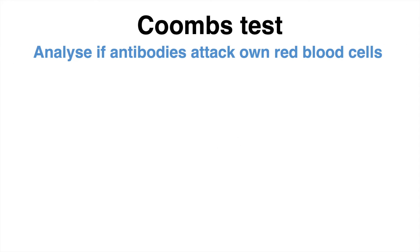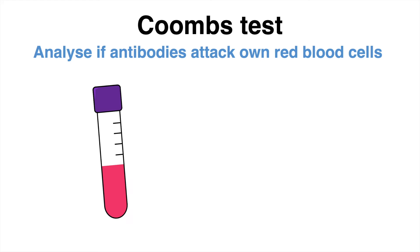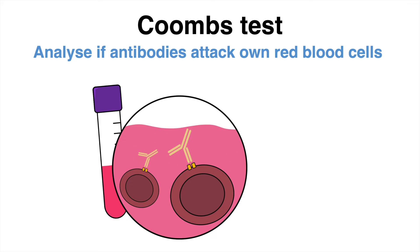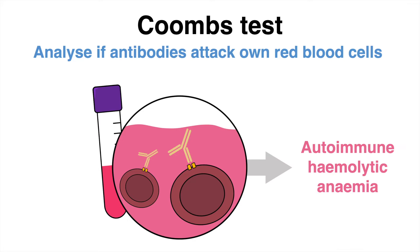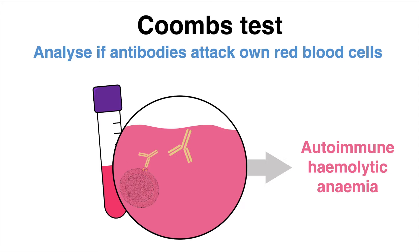With the Coombs test, it is possible to check blood of a patient for antibodies that attack their own red blood cells. This scenario, described as autoimmune hemolytic anemia, causes the destruction of red blood cells. The erythrocytes decrease in number and functionality, resulting in a decreased oxygen-carrying capacity. If left untreated, this can have severe complications. Therefore, it is important to diagnose this condition with the Coombs test.